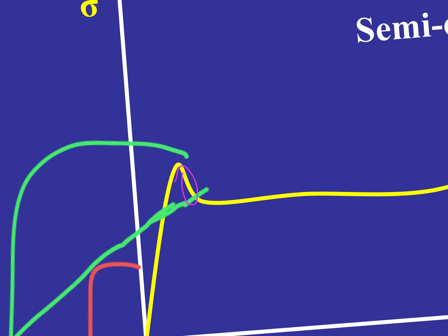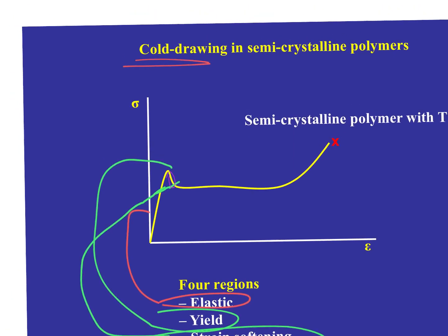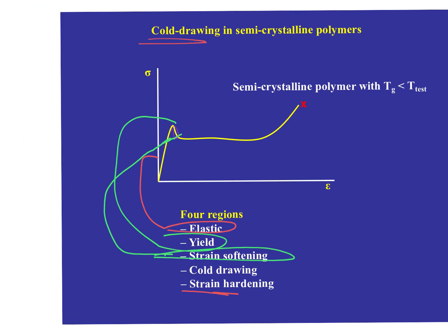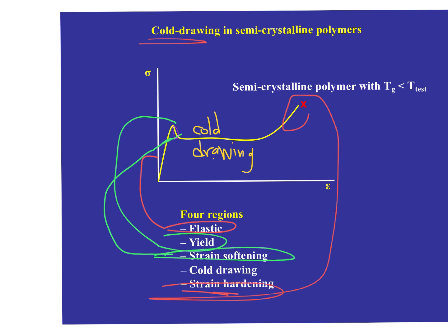The strain softening region is where the material yields at the top point and softens, becoming more easily deformed. Cold drawing is the constant stress region in which the material gets longer and longer. This relates to what happens in a dog bone specimen. At the very end, the strain hardening process occurs — stress rises until fracture. This is in contrast to metals, where strain hardening involves dislocations; here, polymer chains aligning make further strain difficult.